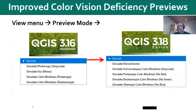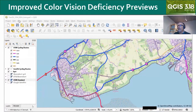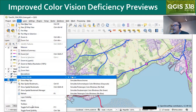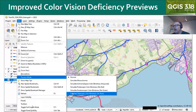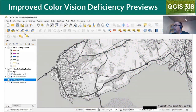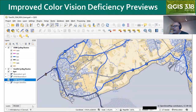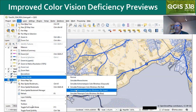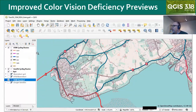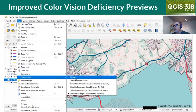One thing that's kind of been hidden in QGIS for years is color vision deficiency, or color blindness, previews. On the left is what this looked like through 3.16 with several simulated color blindness previews available. Now at QGIS 3.18, that's been replaced with the same methodology used in Chrome and Firefox, with four different previews for different kinds of color deficiency. This is really helpful when designing a map for a color blind reader, to ensure features have enough contrast and the right information is highlighted.